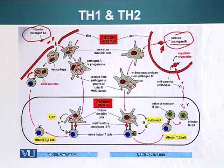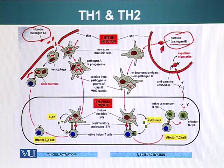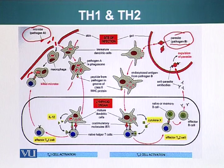The dendritic cells will fuse the phagosome with the lysosome, degrading pathogen A. As we have talked about, antigen presenting cells have major histocompatibility class 2 molecules. Little pieces of pathogen A will be displayed on the surface of the antigen presenting cell — in this case, fragments of pathogen A.